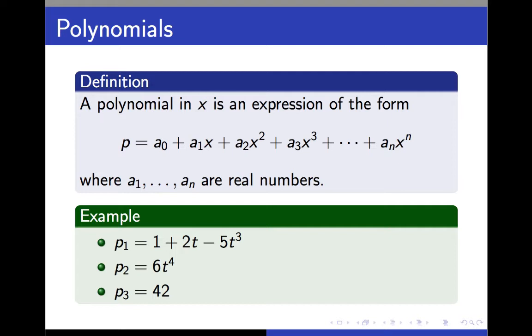And then we add them all up. So, the general form of a polynomial looks like this. We call the constants here the coefficients of the polynomial, and the highest power on x that we see is called the degree of the polynomial.